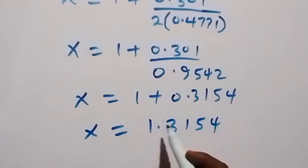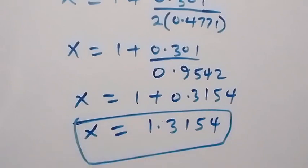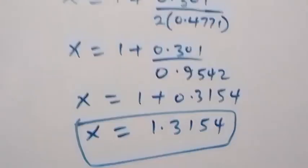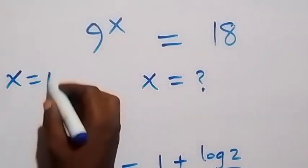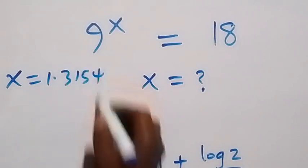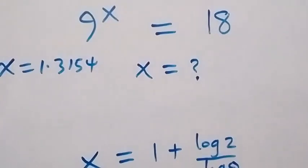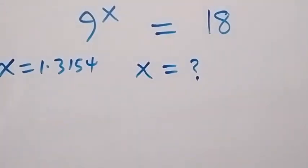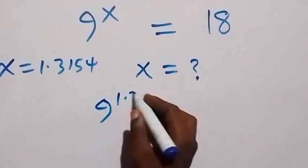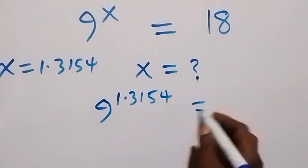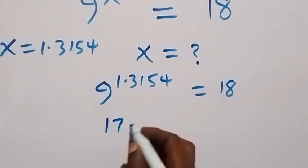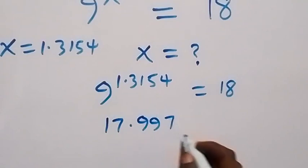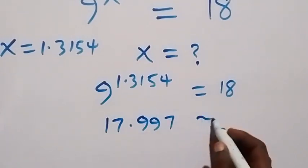Here we have the approximate solution to this problem. When we check by putting the value x equals 1.3154 back into the problem, this becomes 9 raised to the power 1.3154. This gives us 17.997, which is approximately equal to 18.